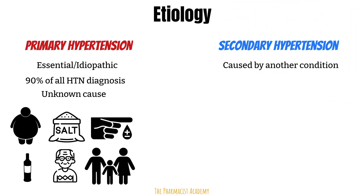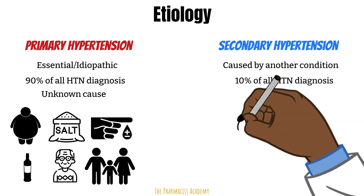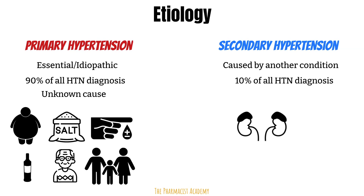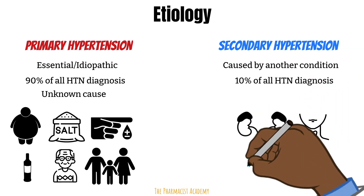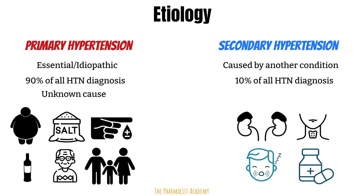Secondary hypertension is caused by another condition and accounts for about 10% of all hypertension diagnoses. Some diseases responsible include renal parenchymal diseases — such as diabetic nephropathy, glomerulonephritis, polycystic kidney disease, and renal vascular disorders with blockage of the renal arteries. Conditions of the adrenal gland can also lead to hypertension, including Cushing's syndrome, primary aldosteronism, and adrenal tumors. Hyperthyroidism, obstructive sleep apnea, and certain medications may also contribute to secondary hypertension.